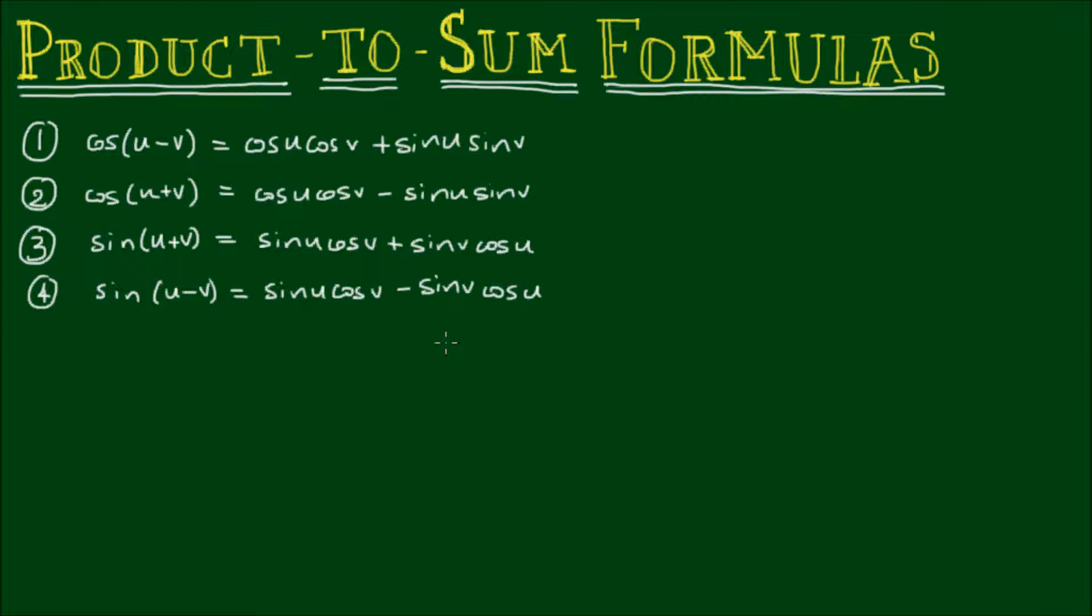And if you want to know how these come about, there is a suggested video on the top right-hand corner which will link to the video where these are derived. But if we can express the sum or the difference of two angles as a combination of the multiplication of these angles, or the product of these angles, then it follows we can go the other way around. So with these set of equations,